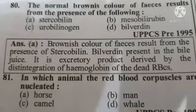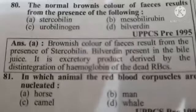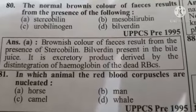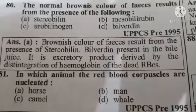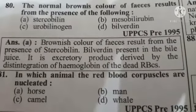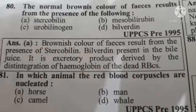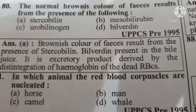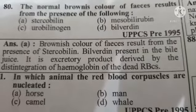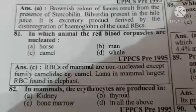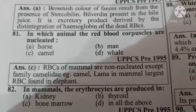Now come to the question: in which animal are the red blood corpuscles nucleated? Option A: horse, Option B: man, Option C: camel, Option D: whale. The correct answer is camel. In camel, RBCs are nucleated, and the largest RBCs are found in elephant.